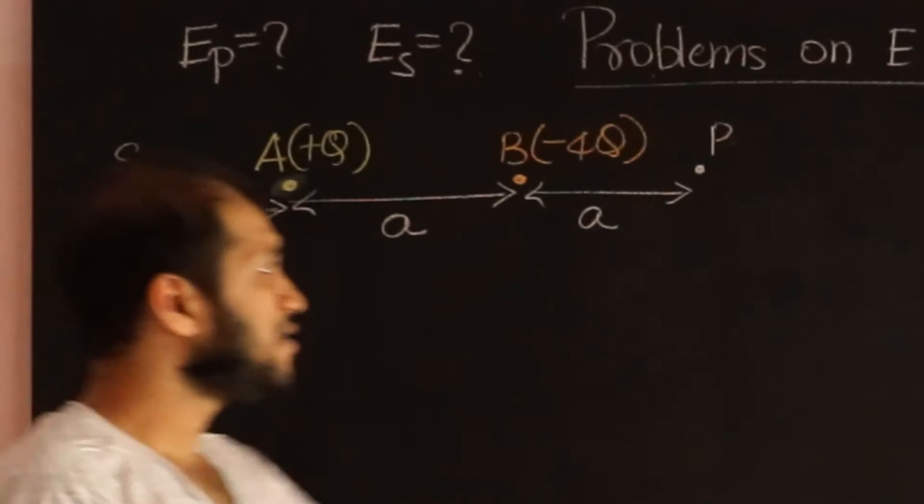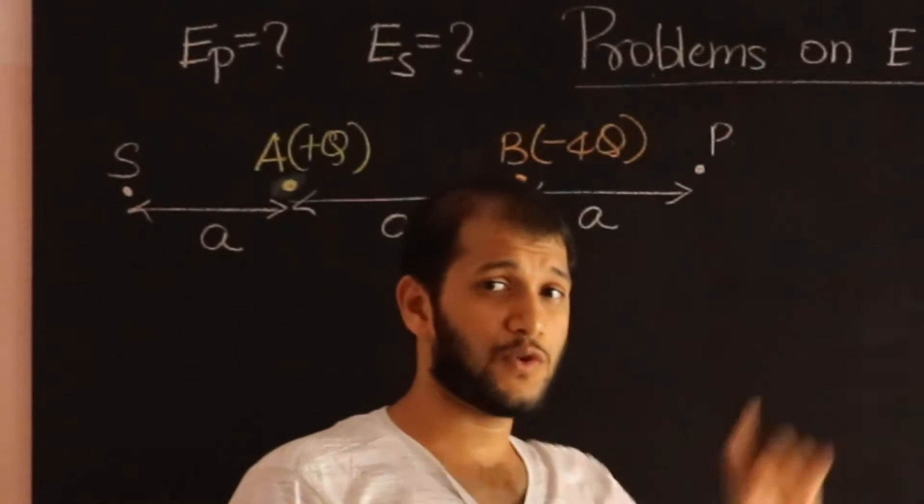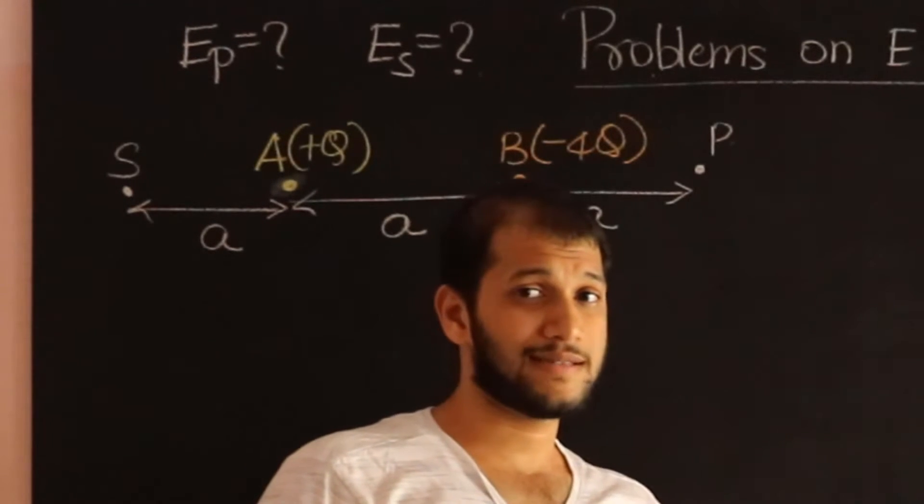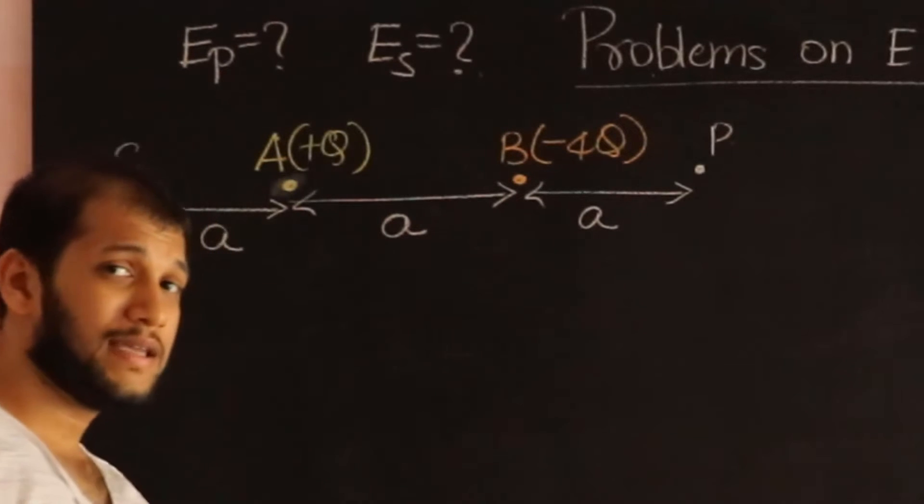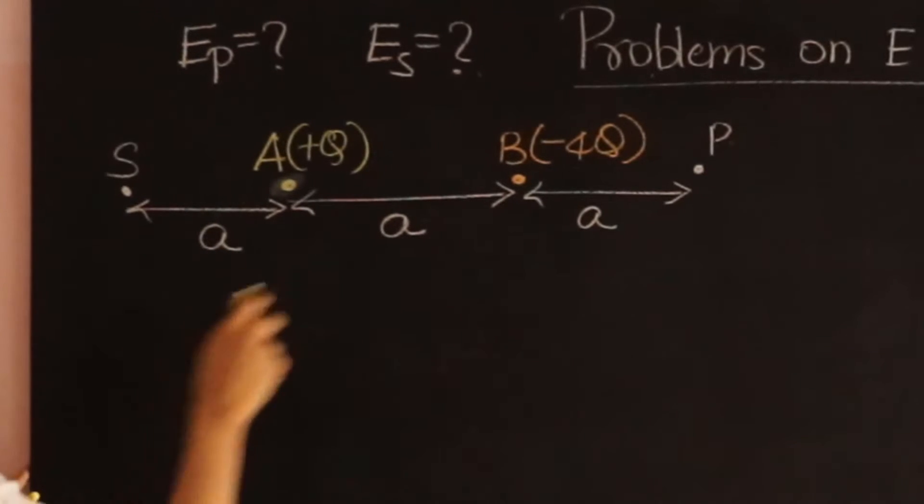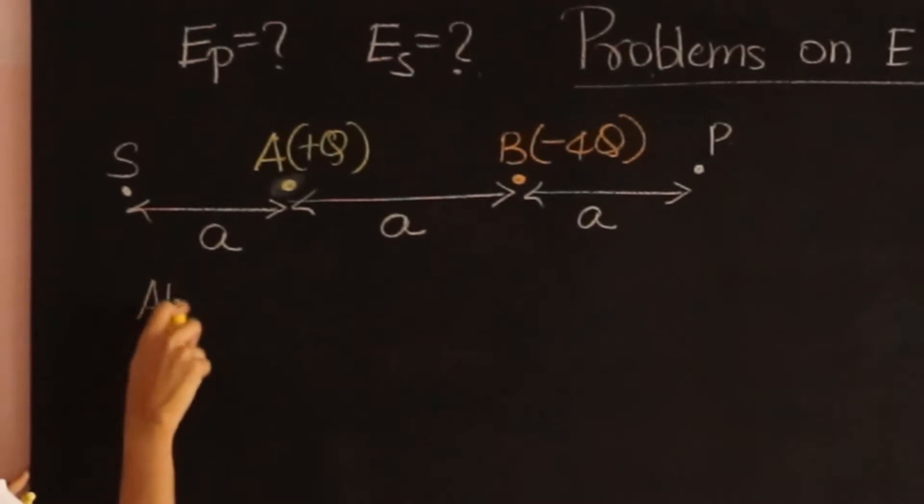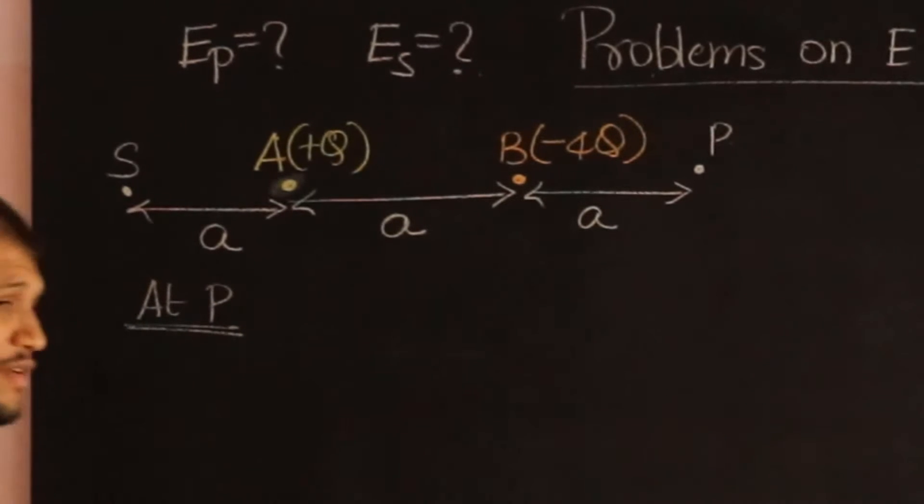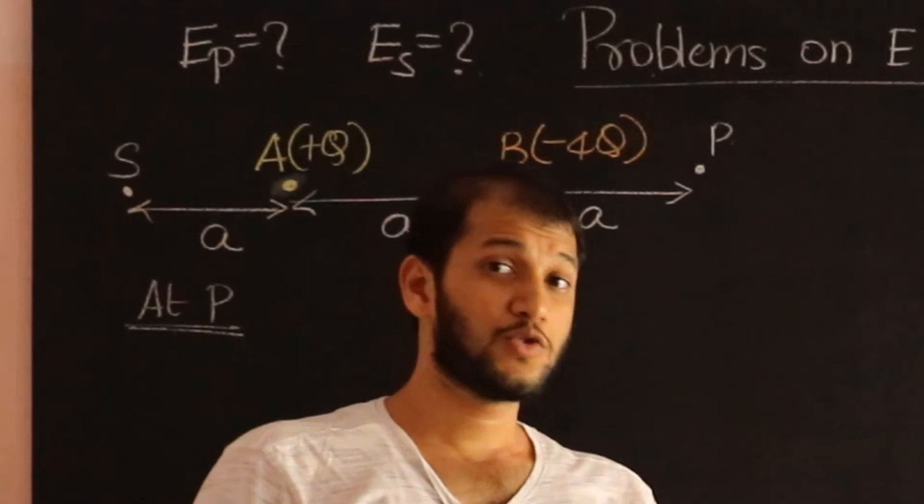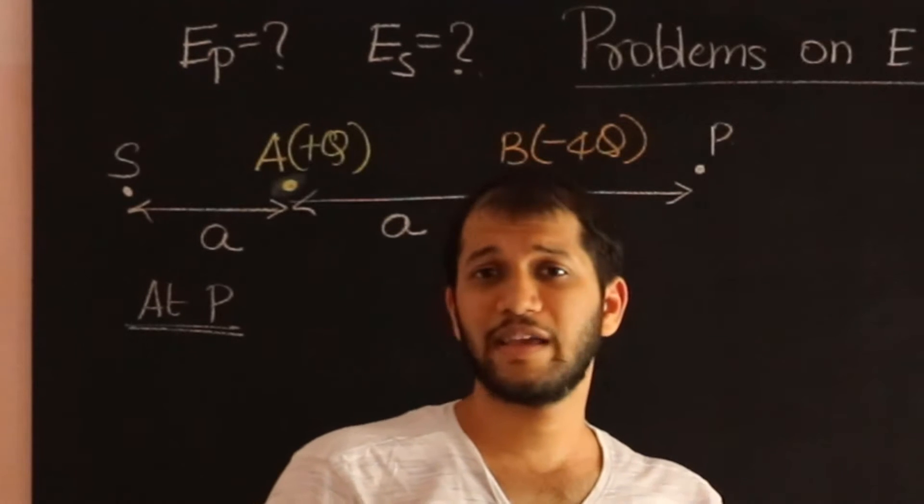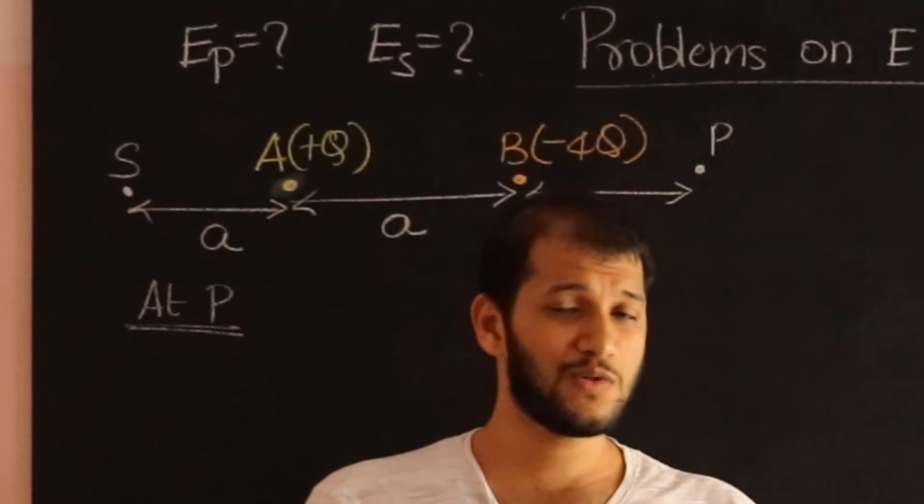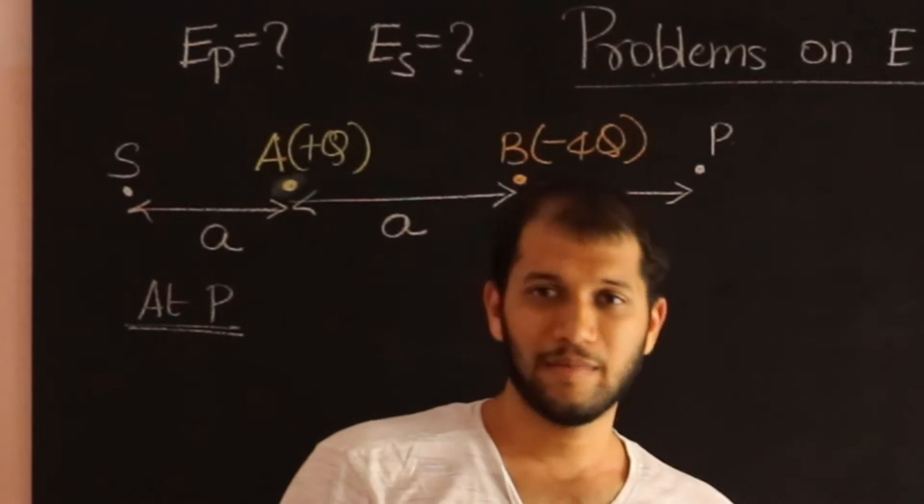We are again dealing with one dimensional case, so we don't have to worry too much about vector analysis. So let's begin. Let's calculate at P first. We will do the same thing what we did last time. We are going to use superposition principle, meaning we calculate electric field due to individual charges, and then just add them up.